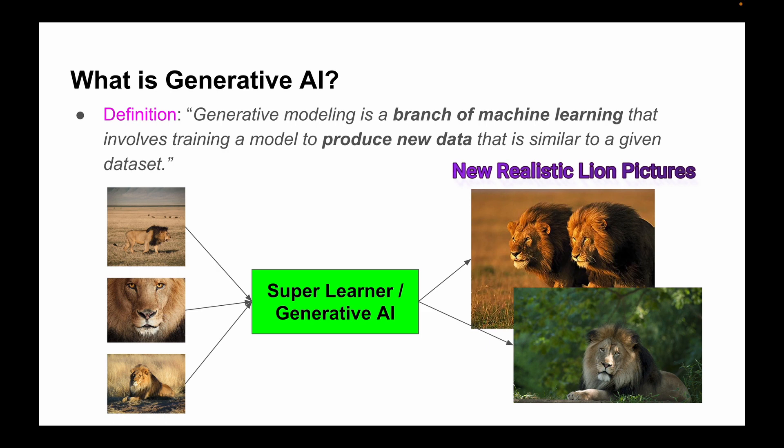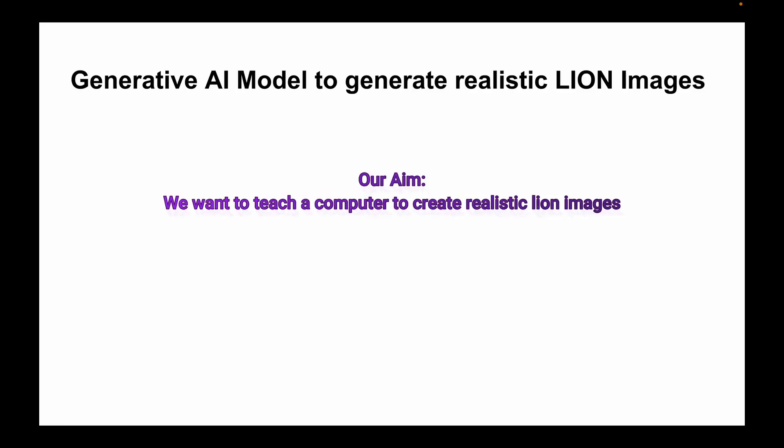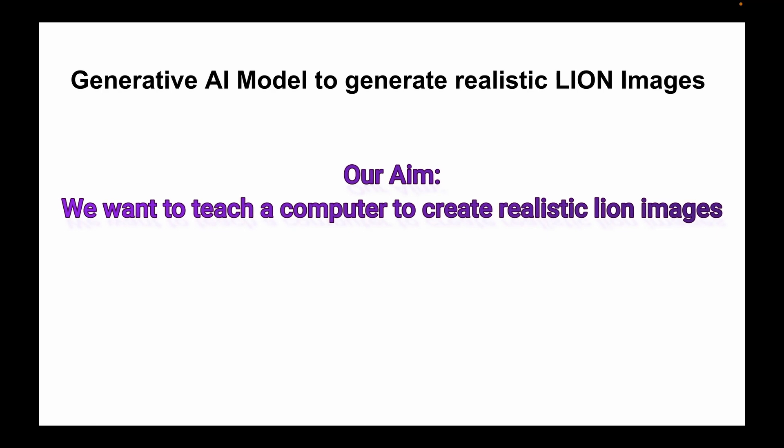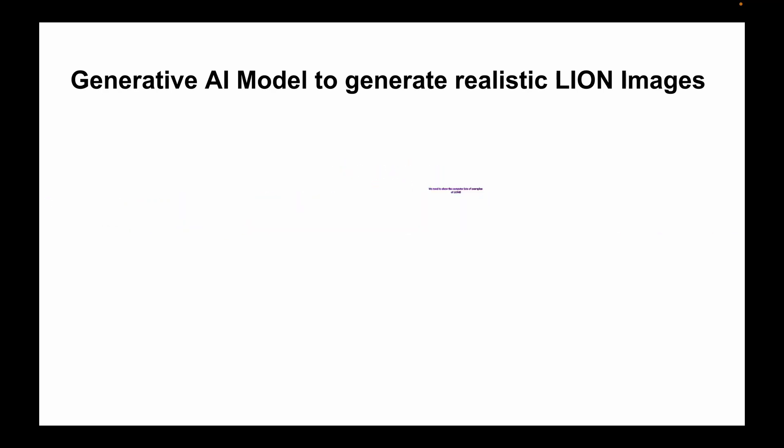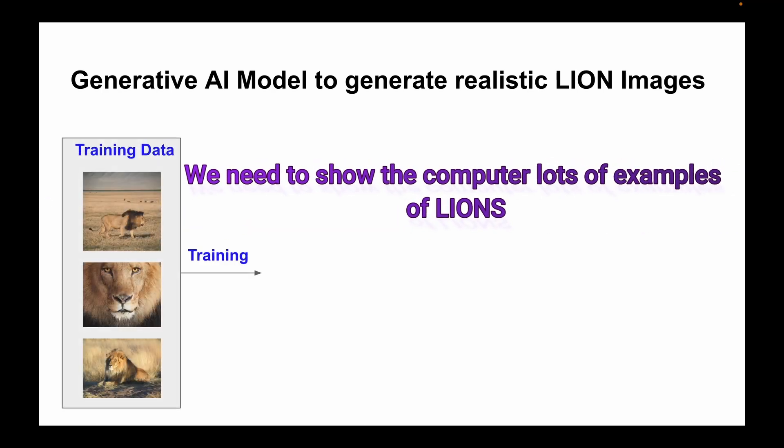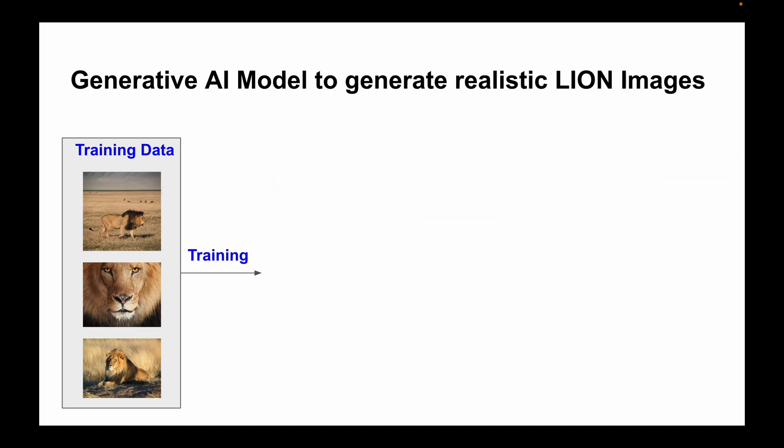These new pixels which are generated by this generative model look so real even though they weren't in the original lion photo collection or in the training data. To teach a computer to create realistic lion images, we need to show the computer lots of examples or observations of lions that we refer to as training data.